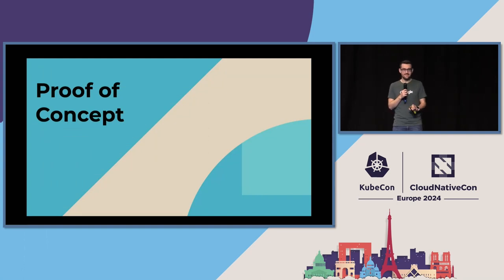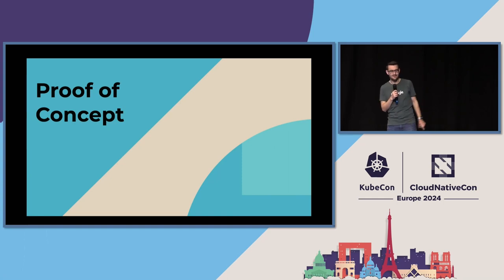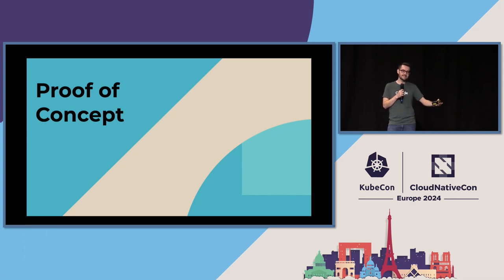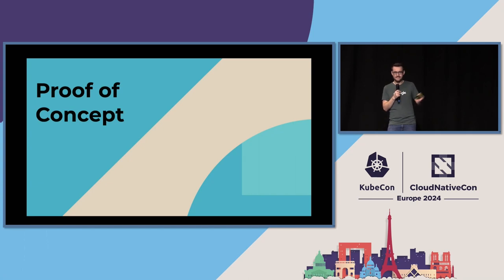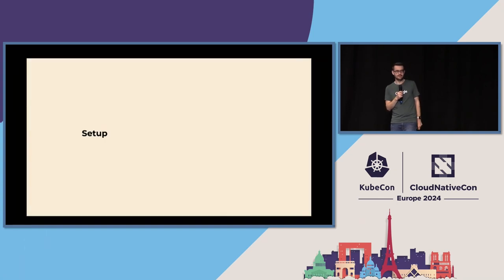I have to give complete credit for the next section to Lior, who's in the front row — this proof of concept would not have happened without him. Part of working through all of this is you put it all on paper, and then there's the question: does this even work? Lior actually wrote this all out to make sure it could actually work as an authorizer. Let's do a very simple example of this working in real life.